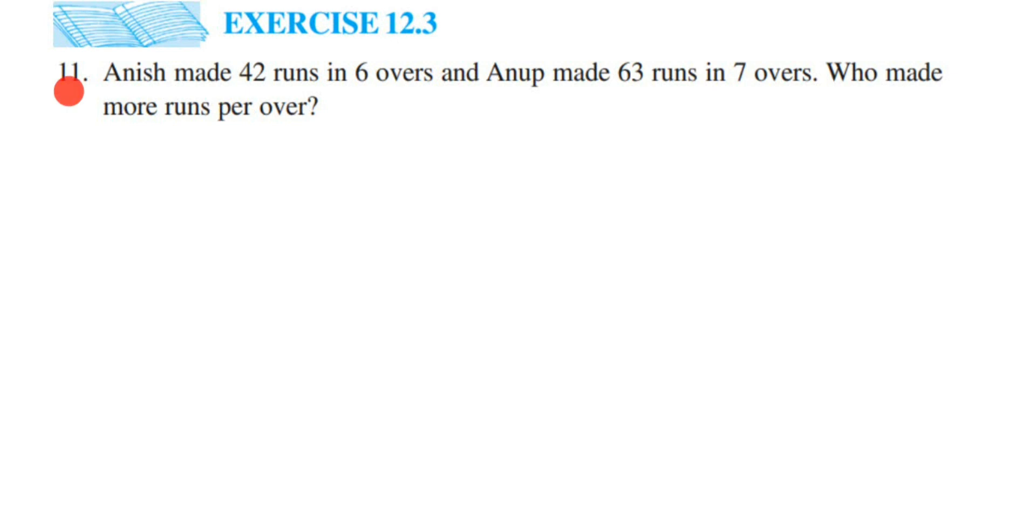The question is, this is the 11th question, it is ratio and proportion of class 10. The question is: Anish made 42 runs in 6 overs and Anoop made 63 runs in 7 overs. Who made more runs per over?